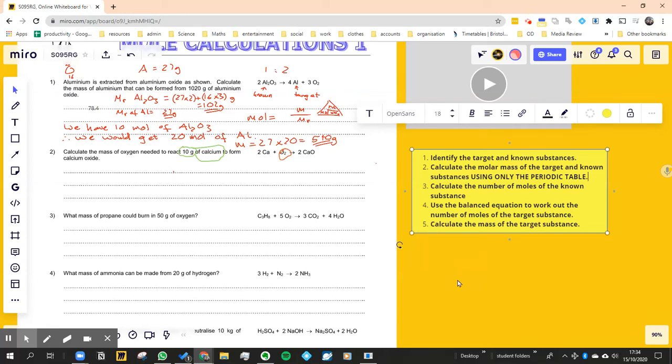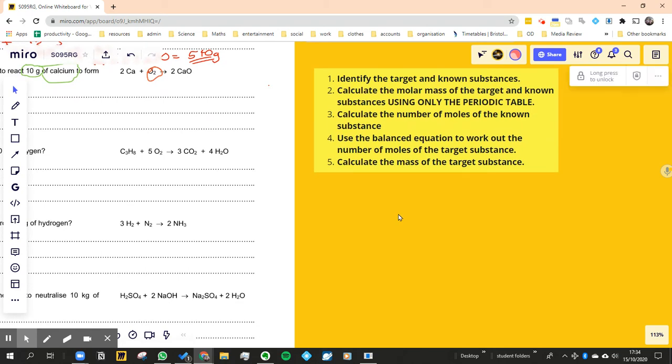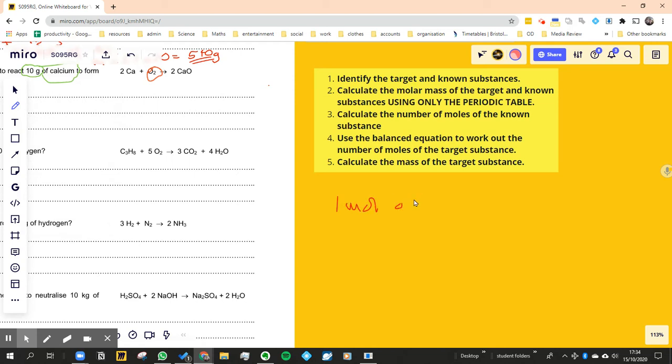A classic thing to try to get your head around with these kinds of questions is what even is a mole in the first place? A lot of you probably know that one mole of aluminum is 27 grams, because you just look at the periodic table and read off the mass number.